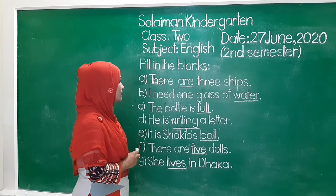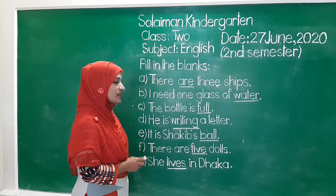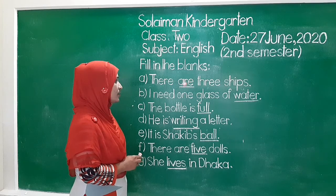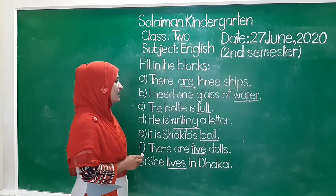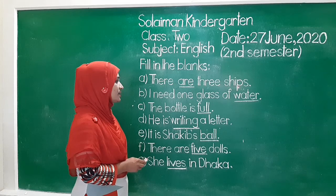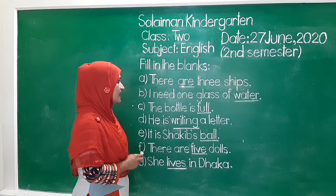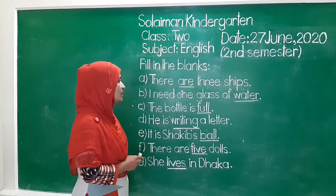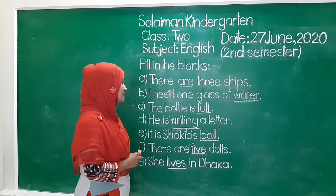In number A, there are ___ sheets. The answer is 'three.' There are three sheets. Artho, shekhani tini tini jaha jachi.